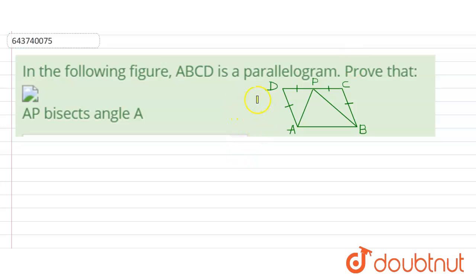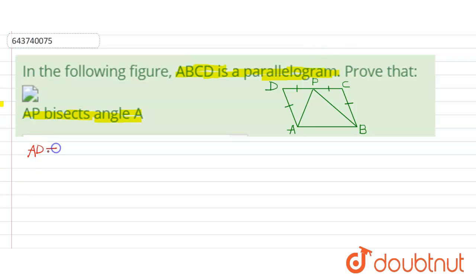Hello students. In this problem we have given a figure in which ABCD is a parallelogram and we have to prove that AP bisects angle A. It is also given that AD equals DP equals PC equals BC.